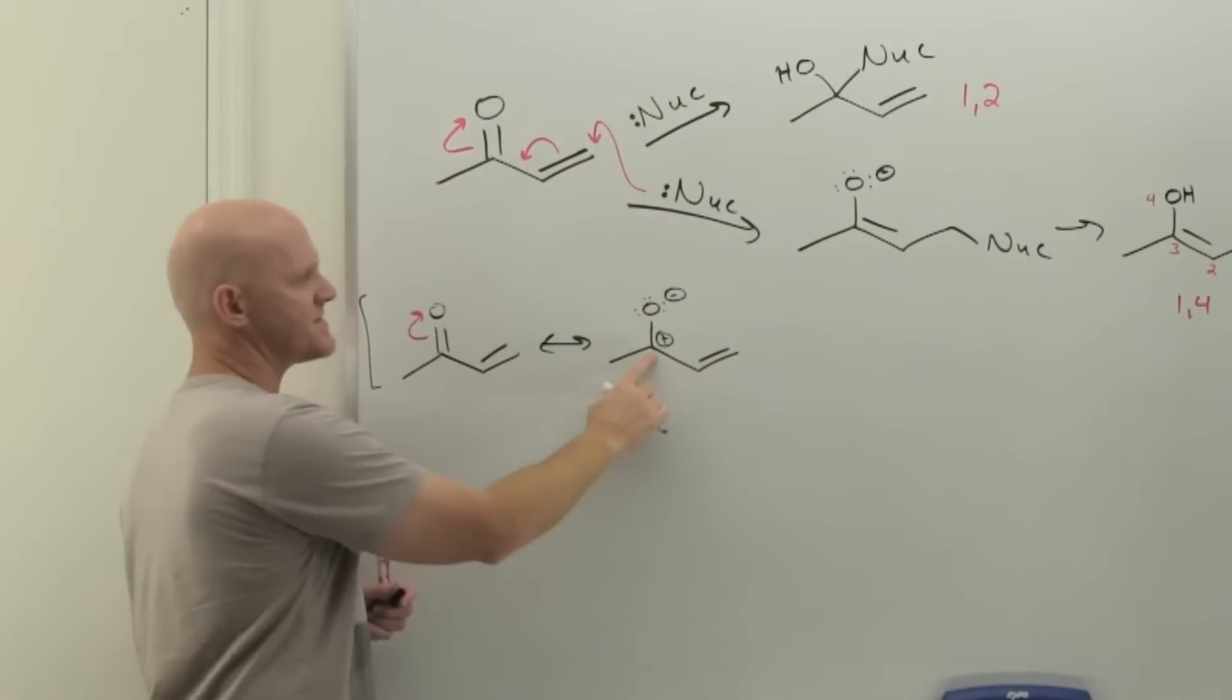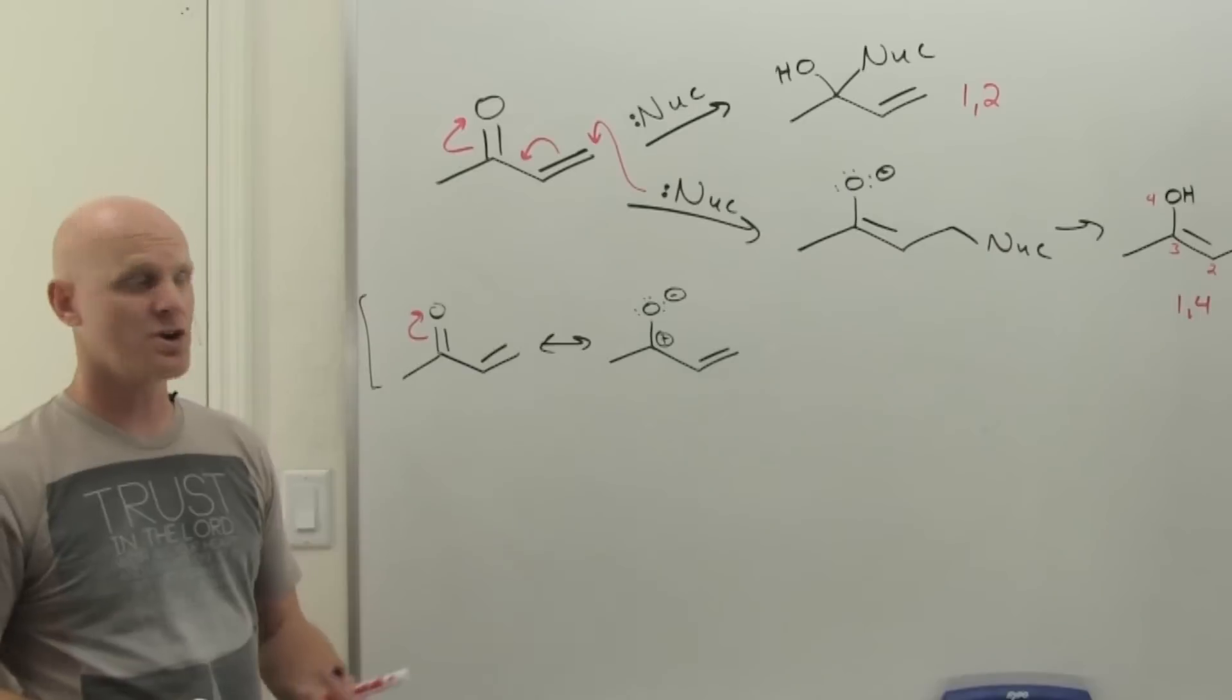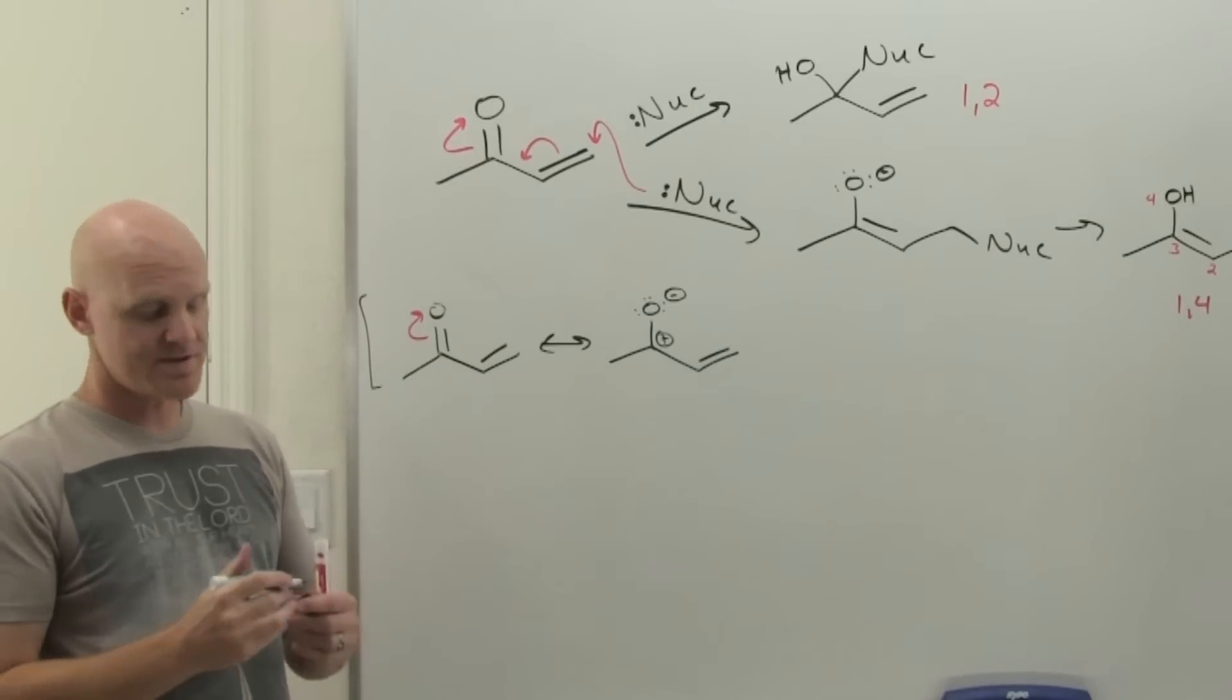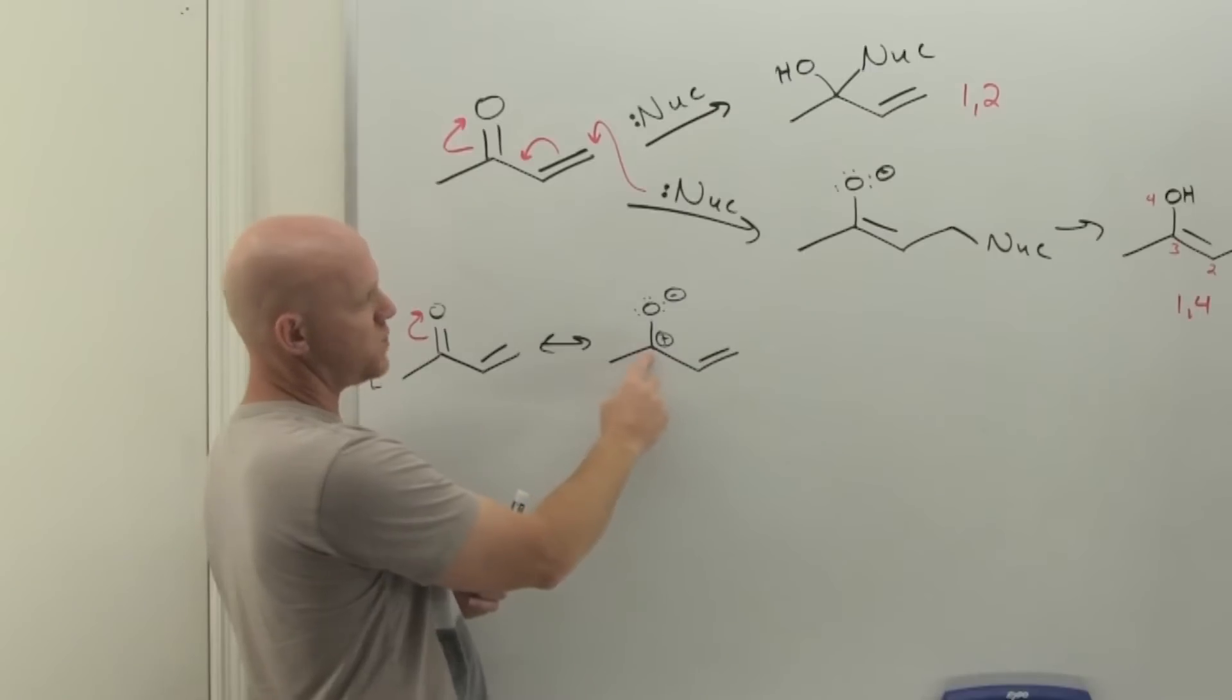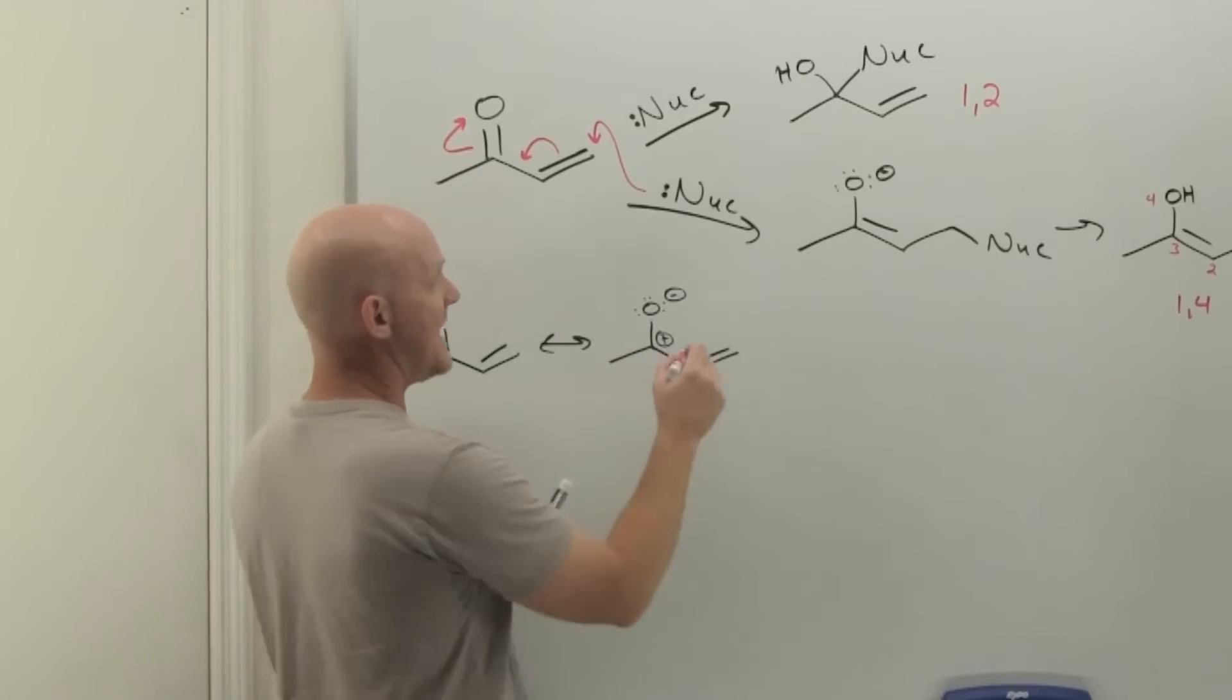A minor resonance contributor shows the carbon with a full positive formal charge. But notice that carbocation resonance structure right there is one bond away from pi electrons, and we have an additional resonance structure we can draw.